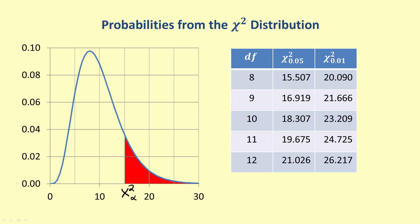For example, in the given table, the chi-square value for a distribution with 10 degrees of freedom and a right tail area of 0.05 is 18.307.